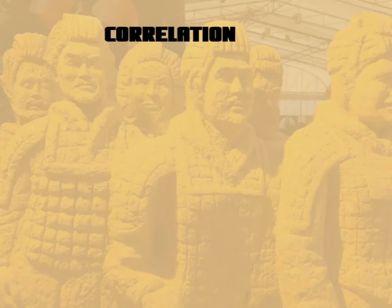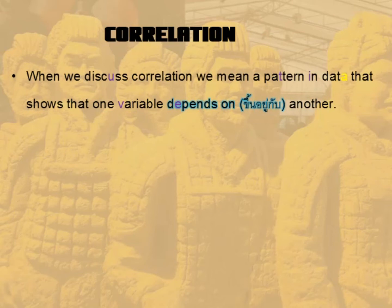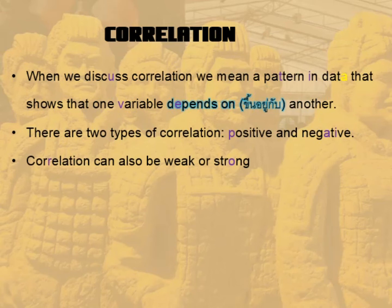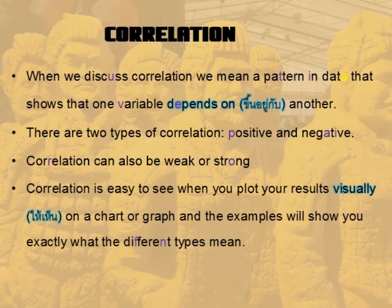Another kind of statistical analysis is correlation, and we normally look for correlation on certain types of graph. What we mean by correlation is a pattern that shows that one variable depends on another. When we talked about variables, we said it was very important to make sure the independent variable is what changes the dependent variable. Correlation is easy to see when you plot your results visually on a chart or graph, and the examples will show exactly what the different types mean.